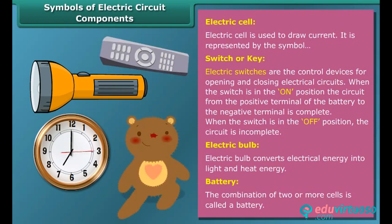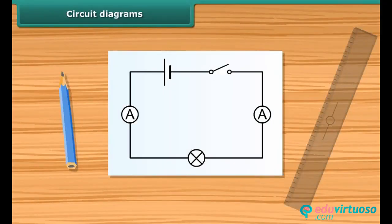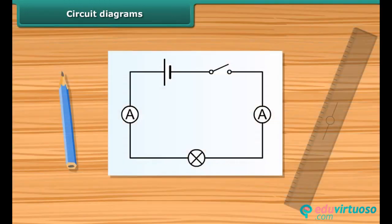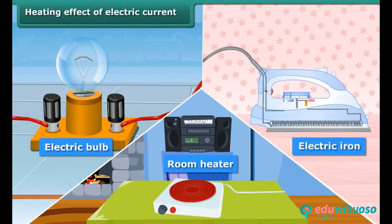TV remote controls are also battery-operated devices. A circuit diagram is a simplified representation of an electrical circuit. It is a drawing using standardized symbols of the arrangement, showing how electronic components are connected together.